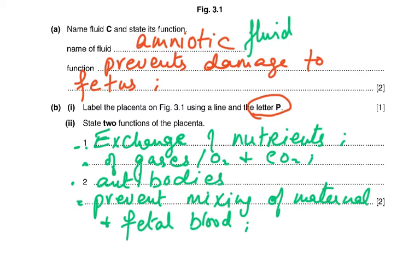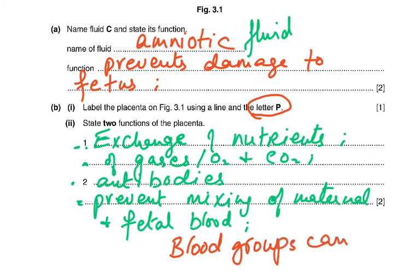The placenta also prevents mixing of the maternal and fetal blood, because blood groups can be different — I said 'can be,' not 'will be.' They can be the same as well. If both parents are blood group A, the child can be A; if both are O, the child has to be O; if both are A, the child can be A or O. We will cover this in the chapter on inheritance.